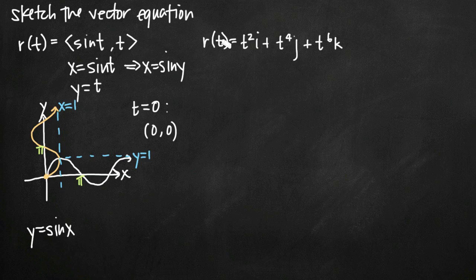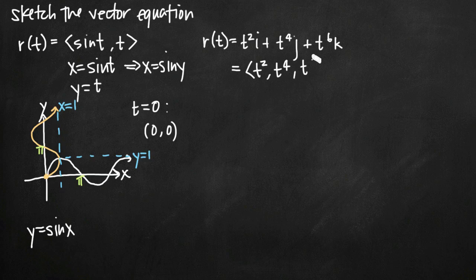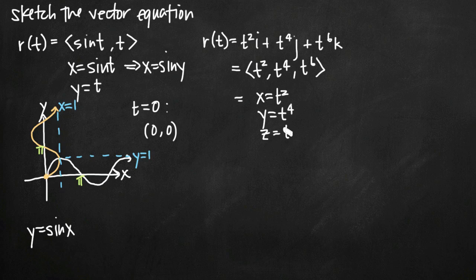Now let's look at our second vector equation: r of t equals t squared times i, plus t to the fourth times j, plus t to the sixth times k. I can take the coefficients on my i, j, and k components and write them as parametric equations. So x equals t squared, y equals t to the fourth, and z equals t to the sixth.